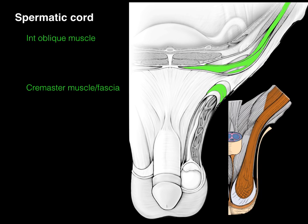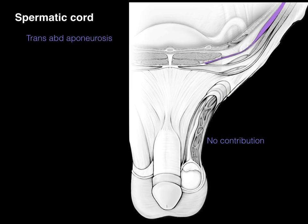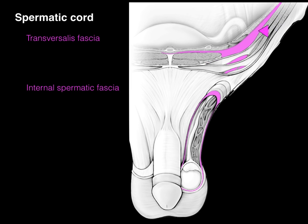Next, the transversus abdominis aponeurosis does not give any contribution to the spermatic cord or scrotal sac — you can see the color above but it doesn't go down below. The transversalis fascia, however, does contribute: it becomes the internal spermatic fascia that surrounds the whole inside connective tissue of the spermatic cord.